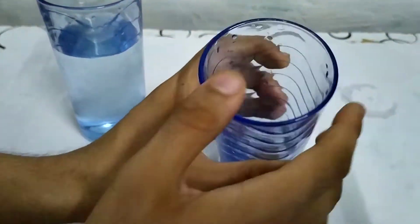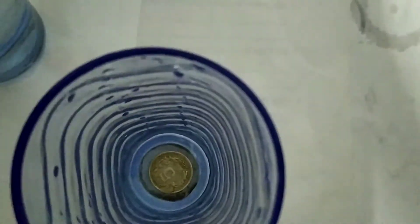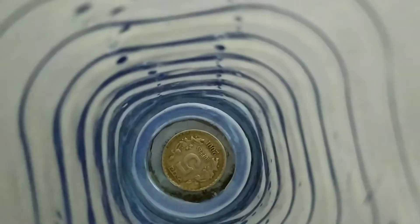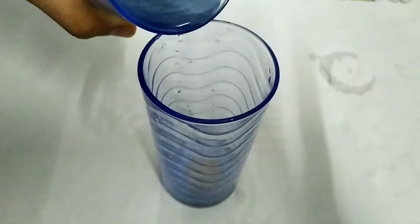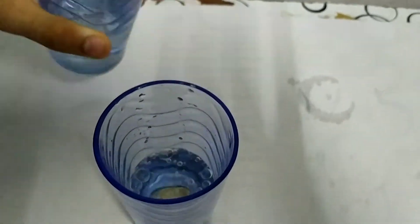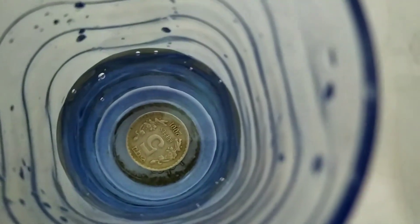Now we will put this 5 rupee coin in the glass and you can see its height. I want you to notice its height, its depth or you can call it its depth. Now I will pour some water in this glass and you will see. Notice what happens. Notice how its height changes. Notice something?